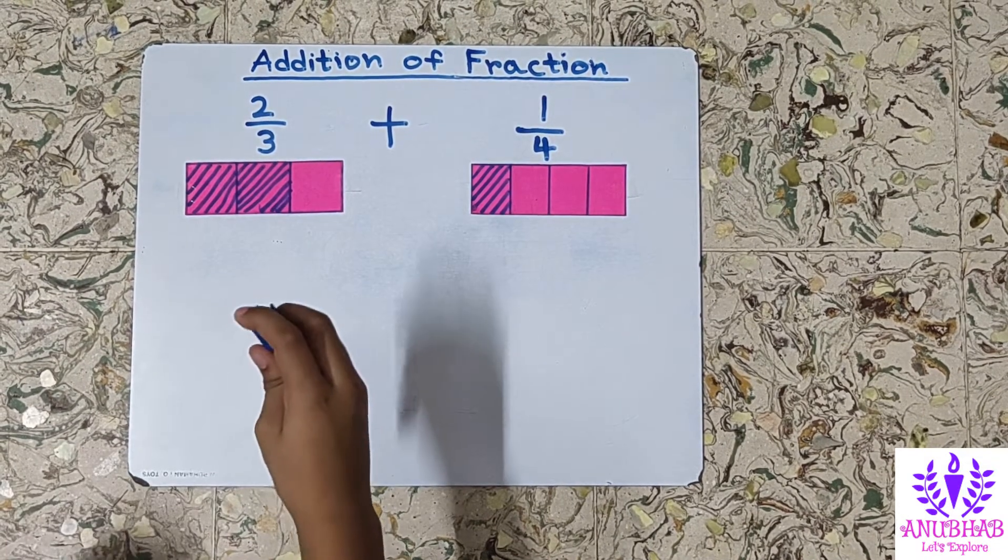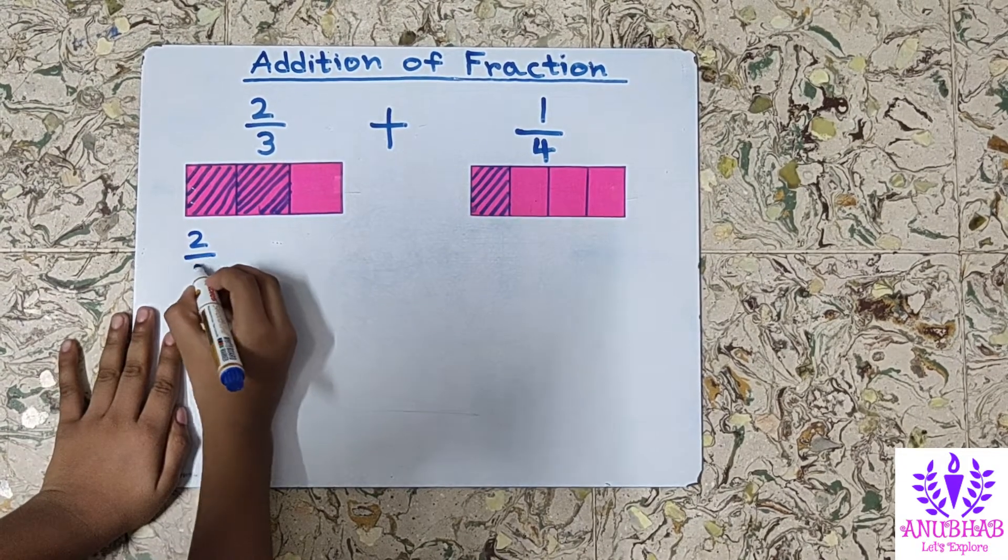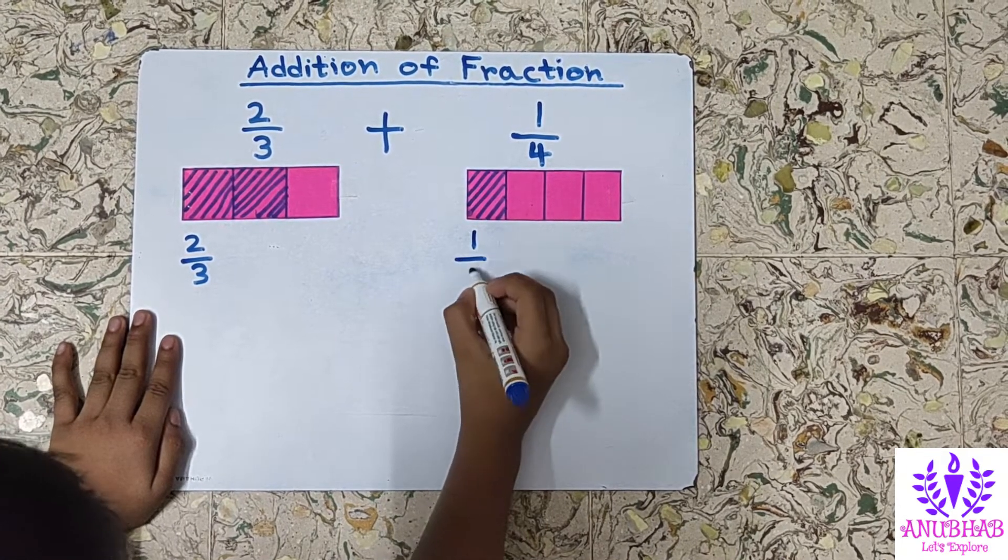First we will make the denominators equal. We have 2 by 3 and 1 by 4.